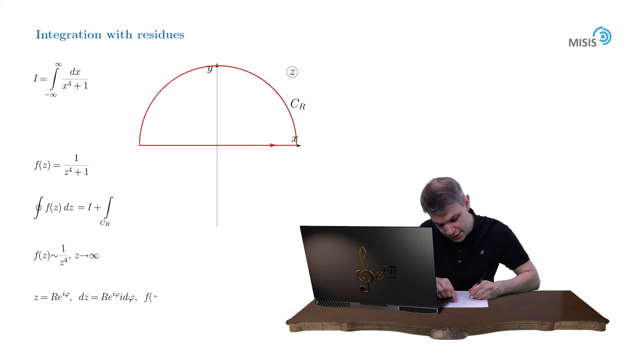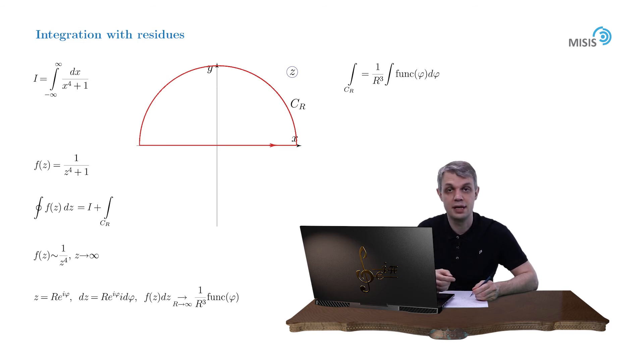f of z dz is turned into 1 over r cubed times some function of φ. As a result, our arc integral is proportional to 1 over r cubed times some integral which depends only on the angle φ. And as r tends to infinity, this integral of course tends to zero.